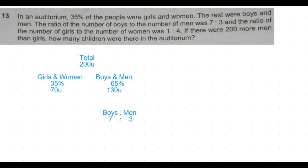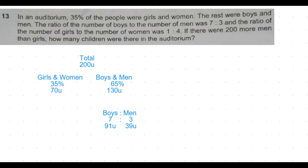This 130 is now divisible by 10, so each part would be 13 units. That means three parts men would be 39 units and seven parts boys would be 91 units.